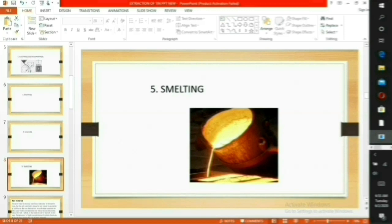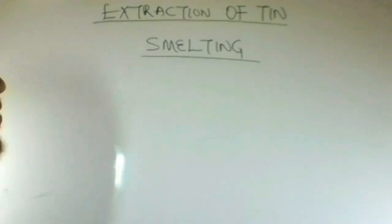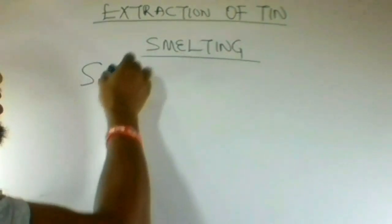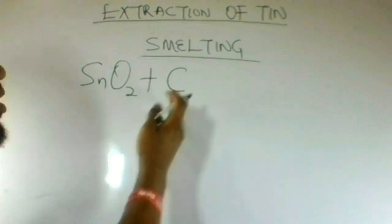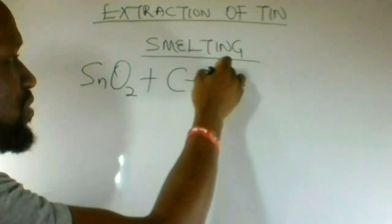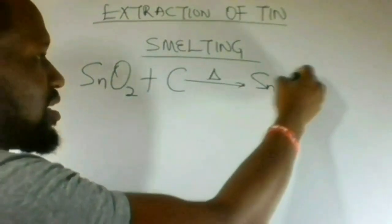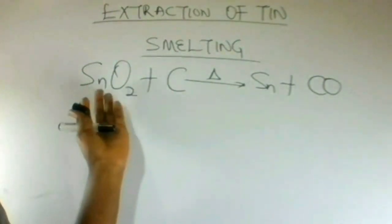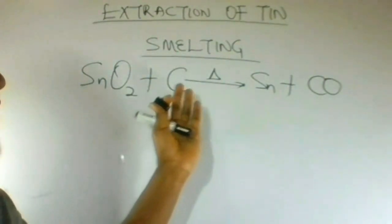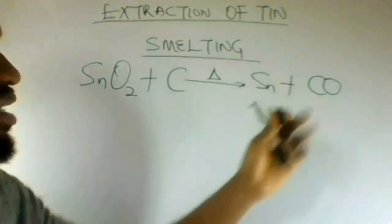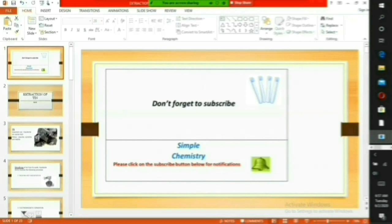In the final process, the smelting process, the tin ore is reduced by carbon at very high temperatures to produce tin and carbon monoxide. Thank you.